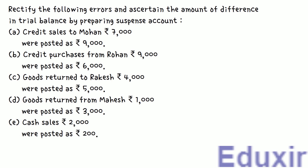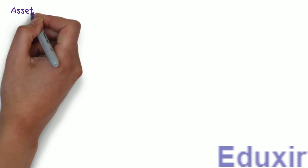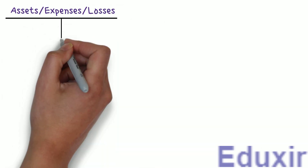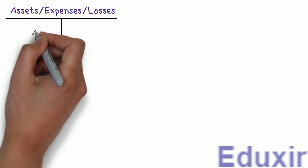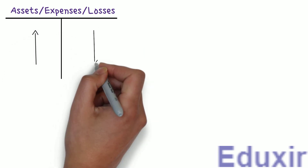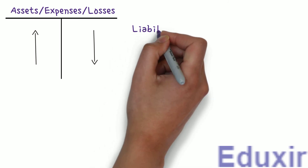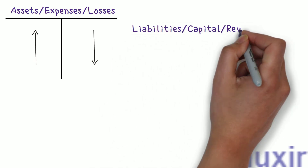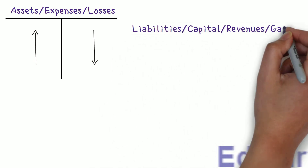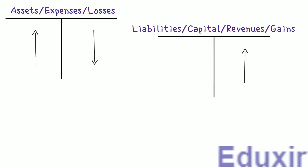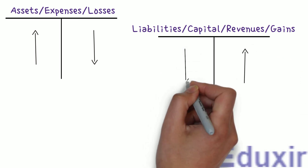Before we proceed with the analysis of these errors, let's first do a small recap. In case of assets, expenses, or losses, any increase should be debited and any decrease should be credited. Whereas in case of liabilities, capital, revenues, or gains, any increase should be credited and any decrease should be debited.